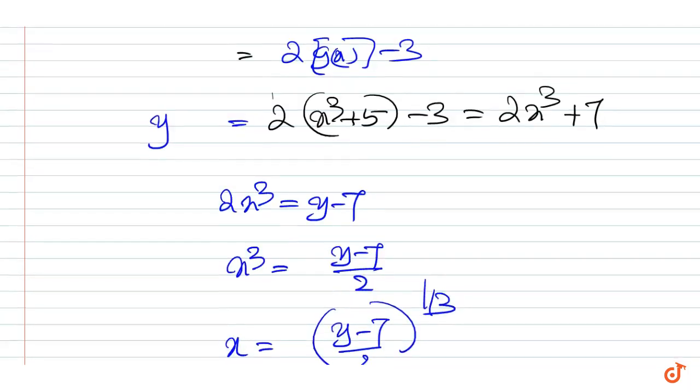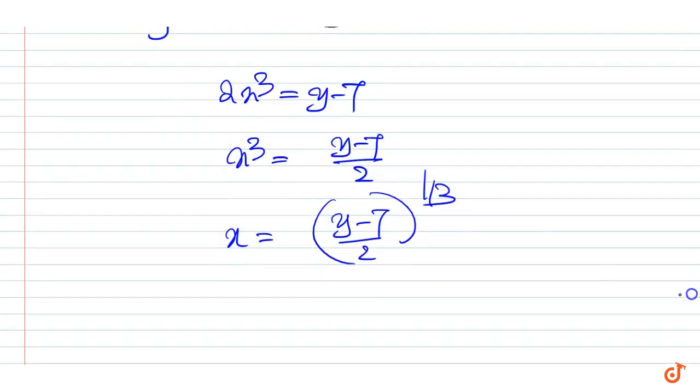That is, (f∘g)^(-1)(x) = ((x - 7)/2)^(1/3).